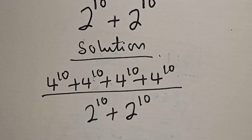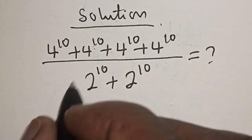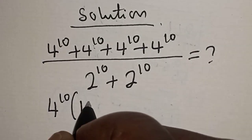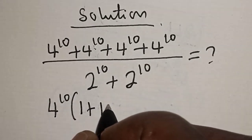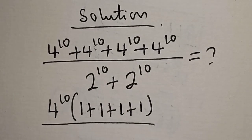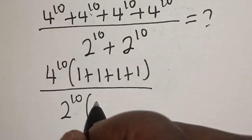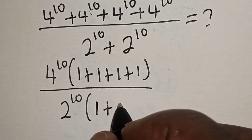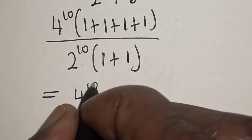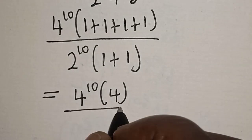Plus 2 raised to power 10. We don't know the value, so from the numerator, 4 raised to power 10 is common — let's bring it out: 4 raised to power 10 bracket, this divided by this: 1 plus 1 plus 1 plus 1. And from the denominator, 2 raised to power 10 is common: bracket 1 plus 1.